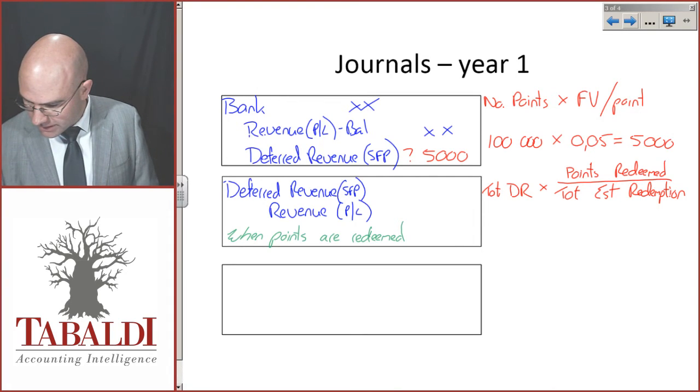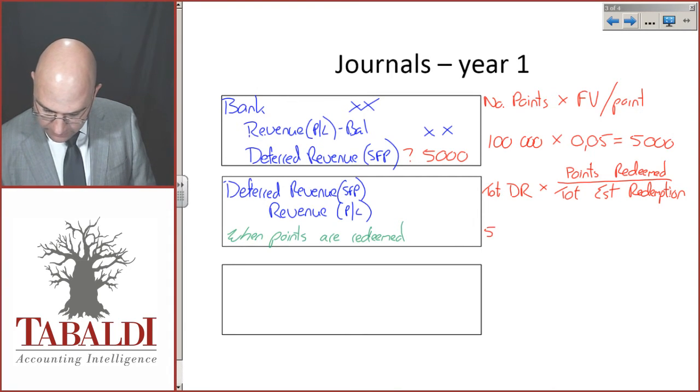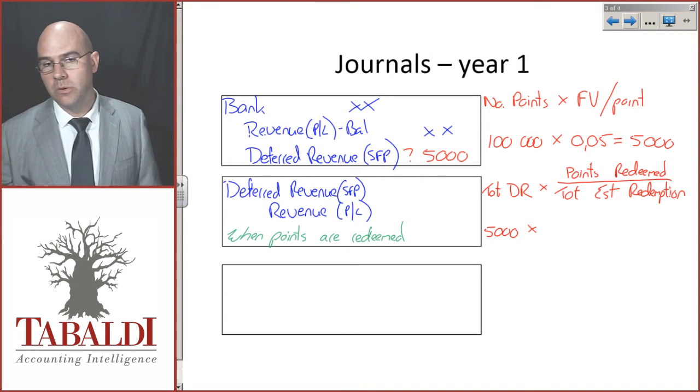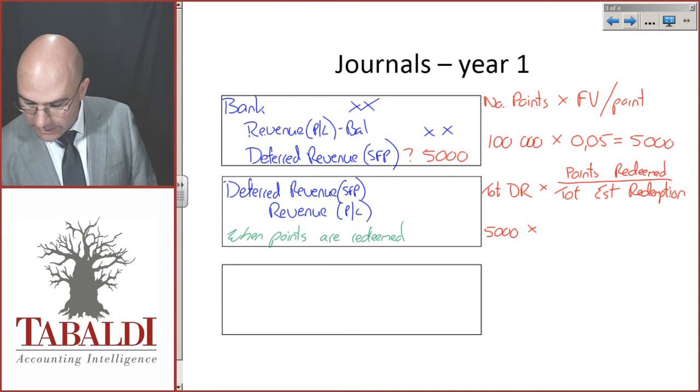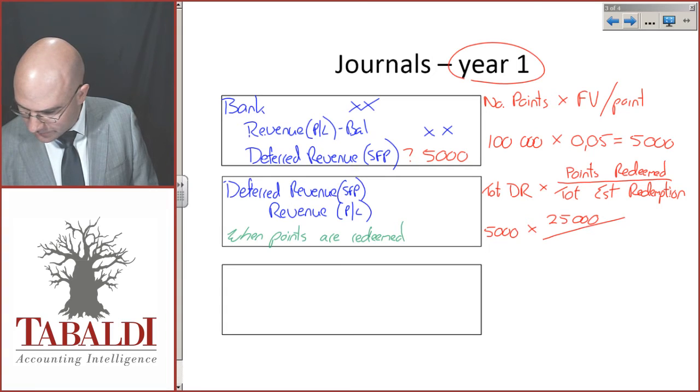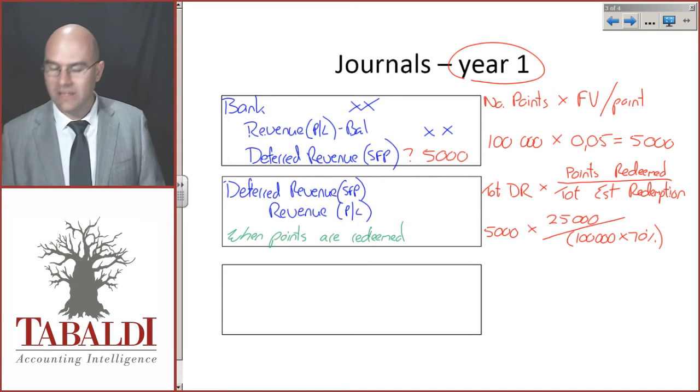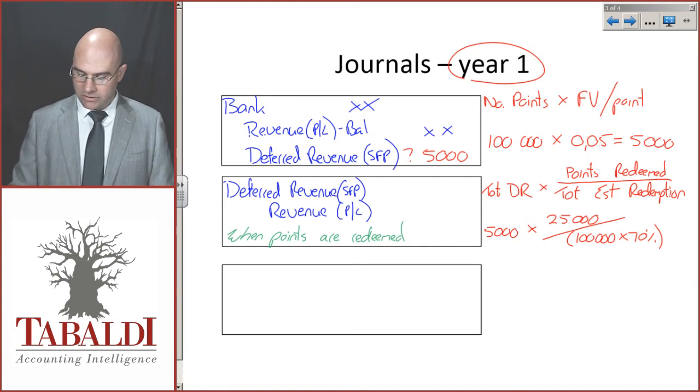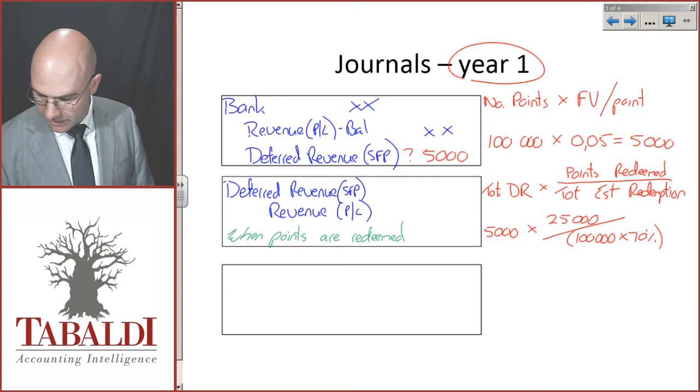In this calculation, we're taking the 5,000 total deferred revenue, times by the points that were redeemed in year 1, which is 25,000, divided by the 100,000 times 70% that we expect the total estimated redemption to be. That gives us a figure of 1,785.